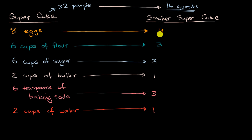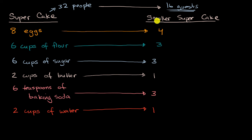Now, this will work, and this is actually how you should adjust recipes. But there's something interesting about what's similar between these two recipes — the recipe for the main super cake that feeds 32 people and the recipe for the smaller super cake. And that's the notion of ratios.